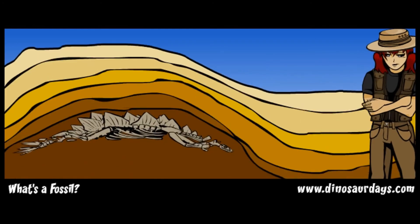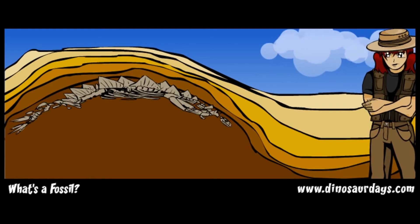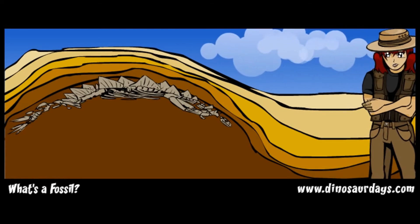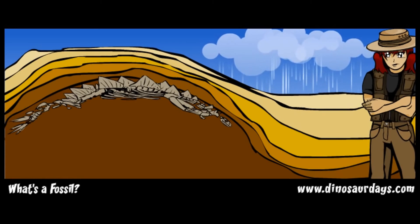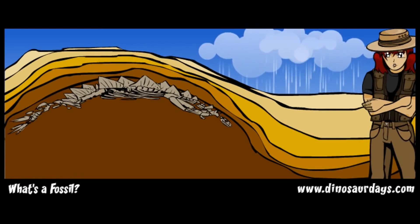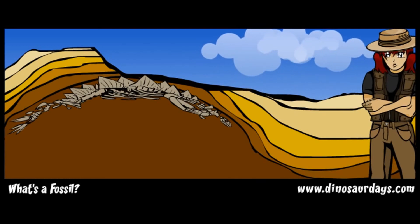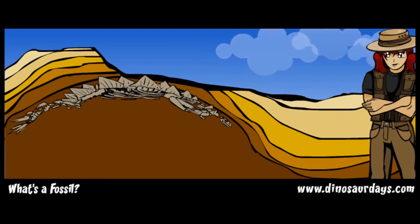Many years later, the rock surrounding the skeleton rises to the earth's surface. This can happen during an earthquake or as mountains rise naturally. The top layers of rock are worn away by wind and rain. Slowly, wind and rain show the fossils to the outside world.